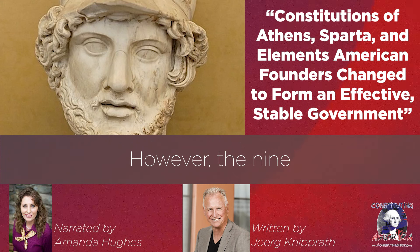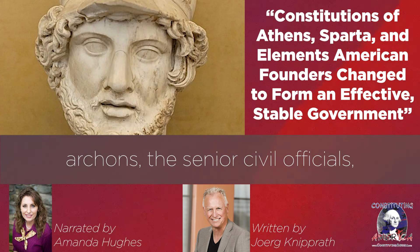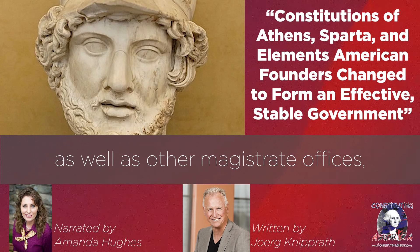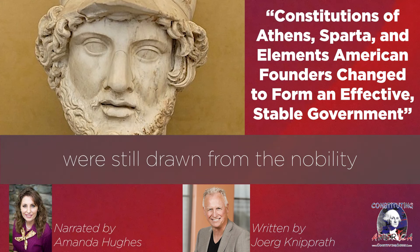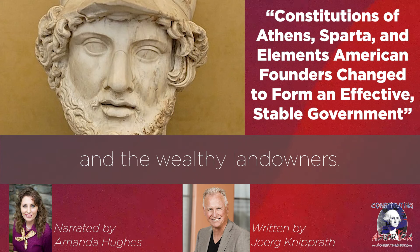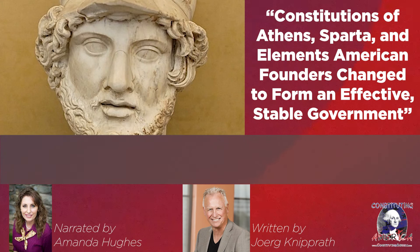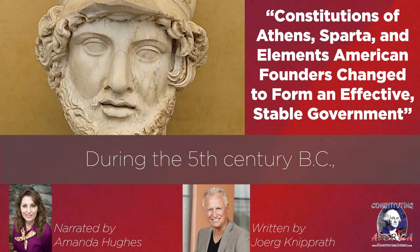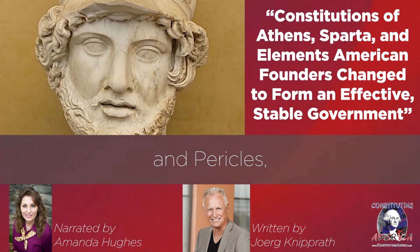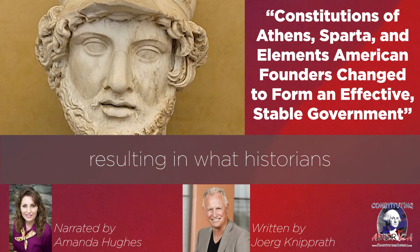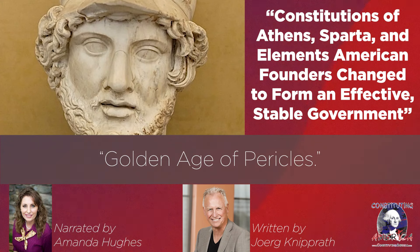However, the nine archons — the senior civil officials — as well as other magistrate offices, such as judges, were still drawn from the nobility and the wealthy landowners. During the 5th century BC, further reforms occurred under Ephialtes and Pericles, resulting in what historians often call Athens' Golden Age of Pericles.